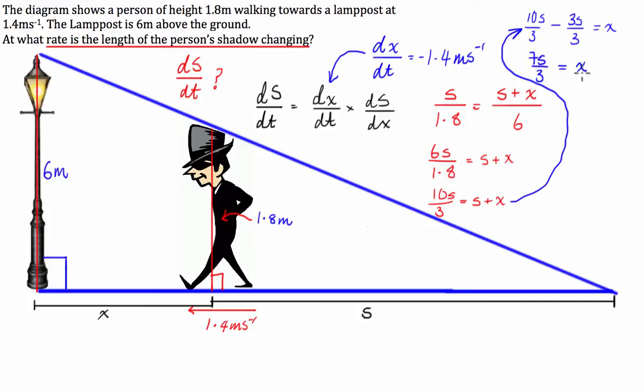But we want S in terms of x, not x in terms of S. So what we need to do is move the 3 and the 7 to the other side. I'm going to multiply by 3 and divide by 7, so I'm going to have S equals 3x over 7.